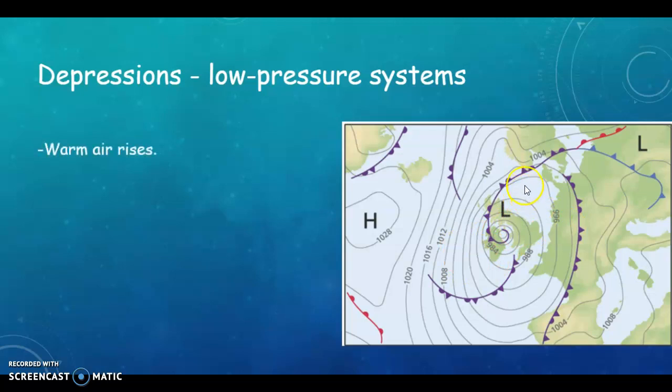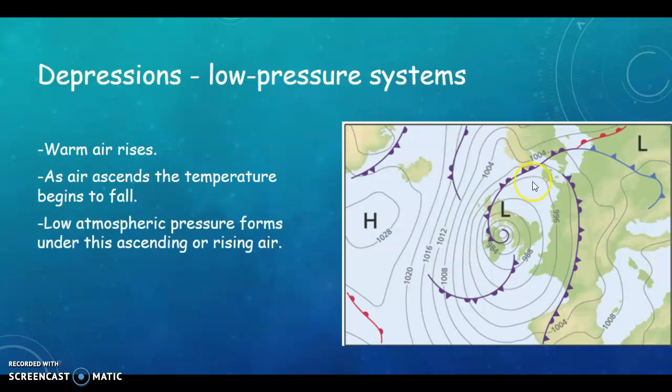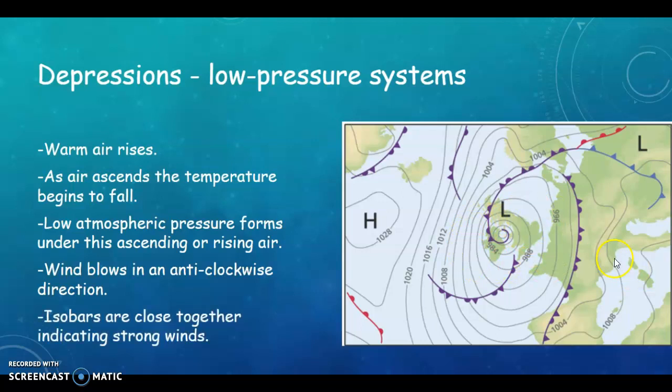So with your low pressure systems, warm air rises. We also know that warm air holds more moisture. So as air ascends, as it goes upwards, as any of us go upwards in the atmosphere, the temperature begins to fall. And low atmospheric pressure forms under this ascending or rising air because there's less pressure on the ground underneath it or on the sea underneath it. Wind blows in an anti-clockwise direction. So that means it blows in the opposite direction that the hands of a clock move in. And isobars are close together. So that means that we are going to get strong winds here around this depression or low pressure system.